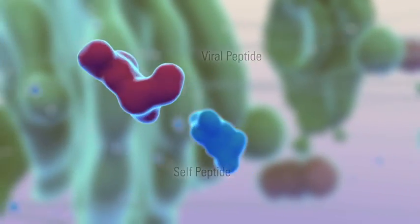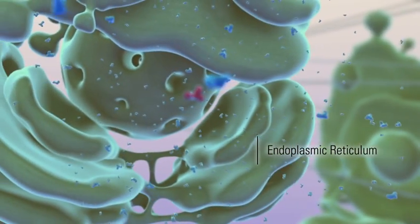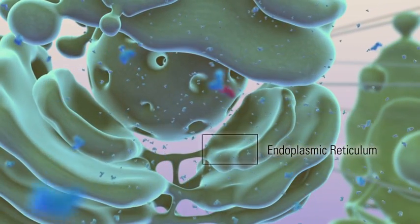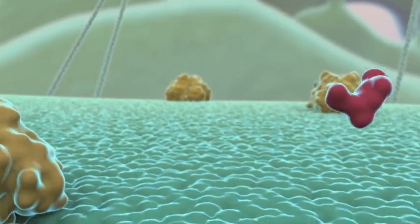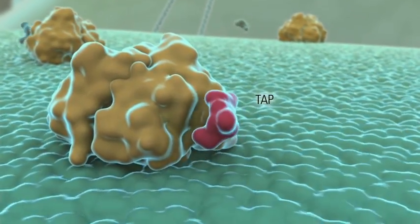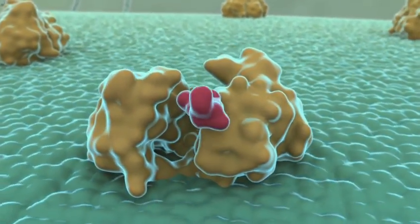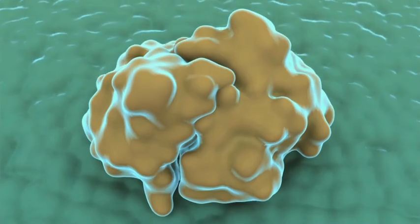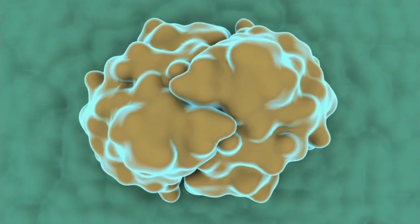These molecules diffuse toward the endoplasmic reticulum, or ER, where they may come in contact with a specialized transporter known as TAP. TAP functions to transport peptide fragments from the cytosol to the ER lumen.